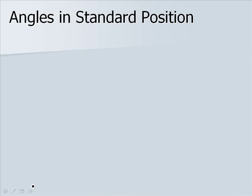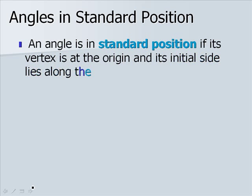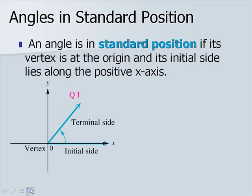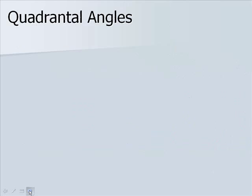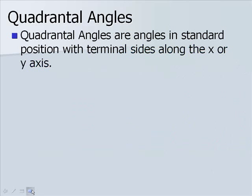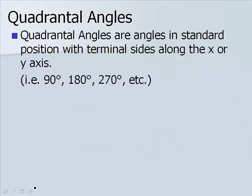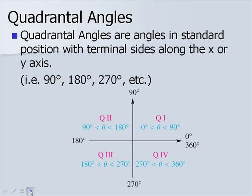Now let's look at angles in standard position. An angle is in standard position if its vertex is at the origin and its initial side lies along the positive x-axis. The first angle we look at is in quadrant 1 and it's an acute angle. The second one has its terminal side in quadrant 2 and it's an obtuse angle. Quadrantal angles are angles in standard position with terminal sides along the x or y axis — examples are 90, 180, 270 degrees, etc.